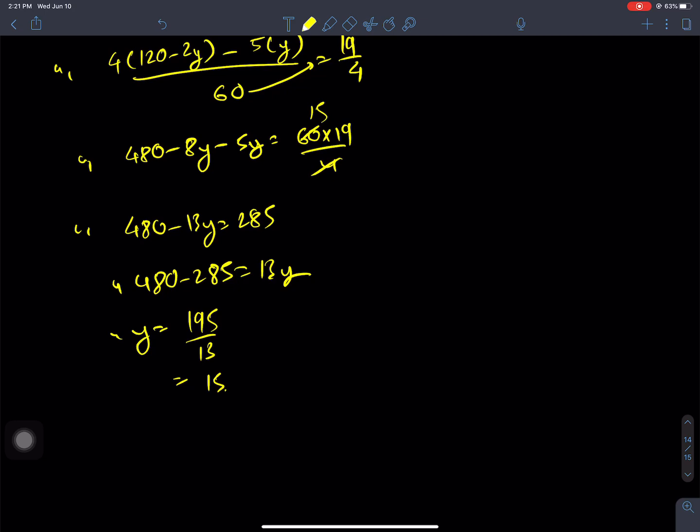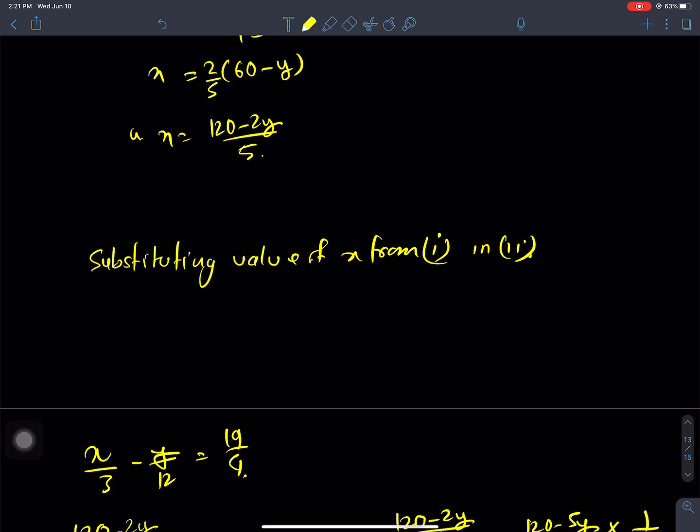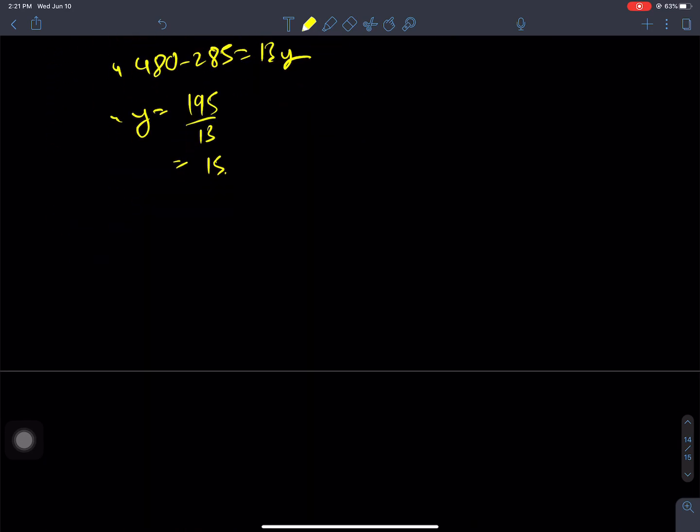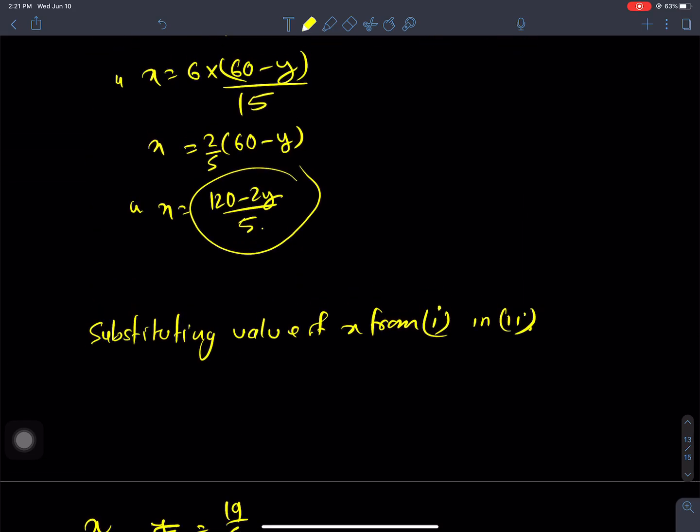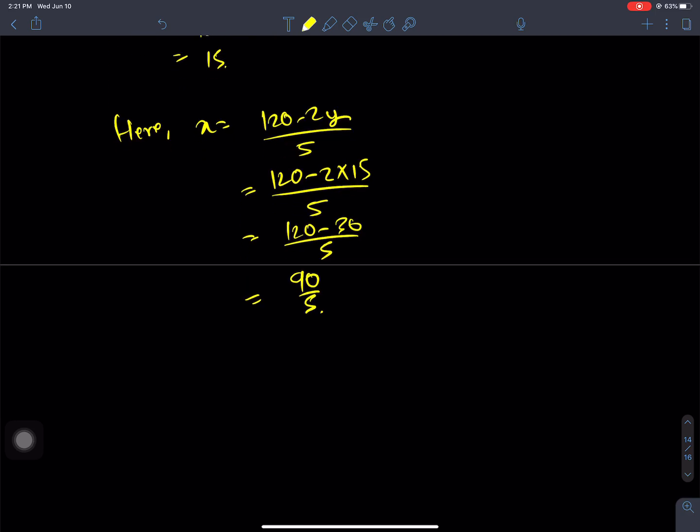Now x = (120 - 2y)/5 = (120 - 2×15)/5 = (120 - 30)/5 = 90/5 = 18.